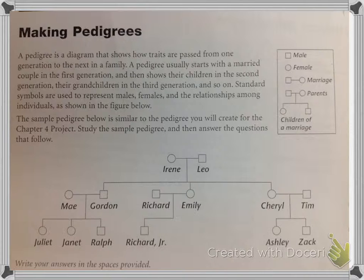This example is just a very simple pedigree. You were asked a couple questions about identifying the names of Irene and Leo's sons, their son-in-laws, how many grandchildren — that's all pretty self-explanatory. But I want to go right to the last question. It says Richard and Emily had another son whom they named Roger. So if we look at Richard and Emily right in the middle here, we're going to add a line and a square for their son Roger.